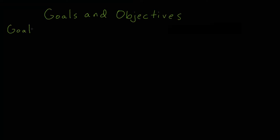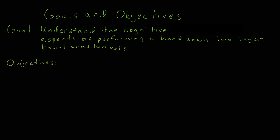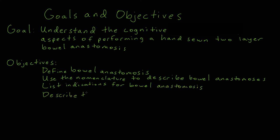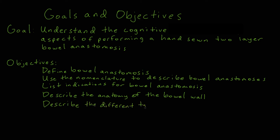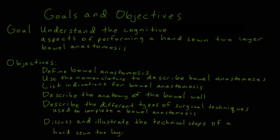Let's review some goals and objectives. The goal of this video is to understand the cognitive aspects of performing a hand-sewn two-layer bowel anastomosis. After watching this video, the learner will be able to define bowel anastomosis, use the nomenclature to describe bowel anastomosis, list indications for bowel anastomosis, describe the anatomy of the bowel wall, describe the different types of surgical techniques used to complete a bowel anastomosis, and discuss and illustrate the technical steps of a hand-sewn two-layer bowel anastomosis.